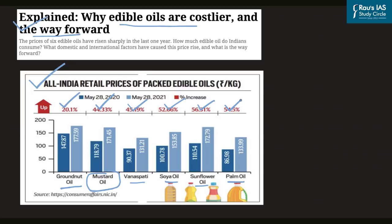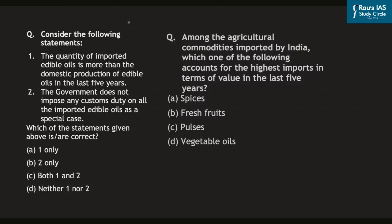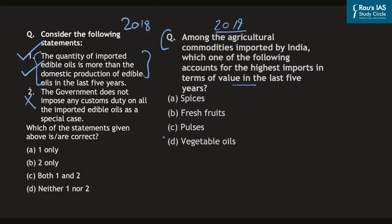What is causing this rise in prices? UPSC has consecutively in 2018 and 2019 asked questions regarding import of edible oil in India. In 2018 it asked about whether imported edible oils exceed domestic production, and in 2019 it asked which agricultural commodity imported by India accounts for the highest imports in terms of value — the answer being vegetable oils. Let us look at the oilseeds profile of India and what is causing this price rise.